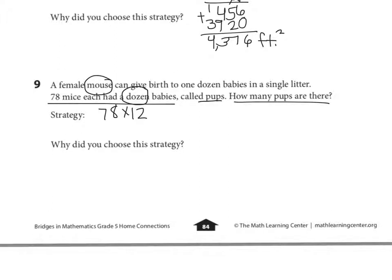In this case, I might use the partial product strategy because I could easily think of 12 separated into 2 and 10. For example, I would take 78 times 10 and then 78 times 2. Because I know 78 times 2 would just be 78 doubled. And 78 times 10 would be 780. And so 78 doubled, 156. Then I would add my two partial products together. 8, 9, 11, 13. 7, 8, 9. So the answer is 936 baby mice.